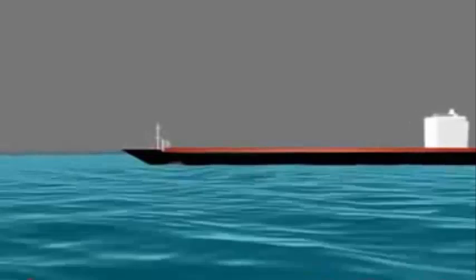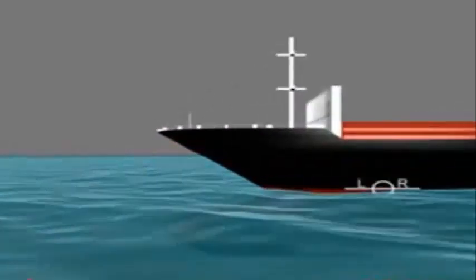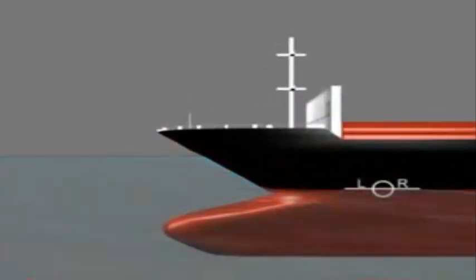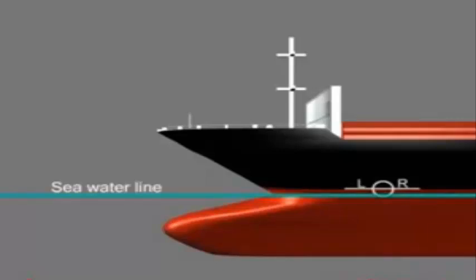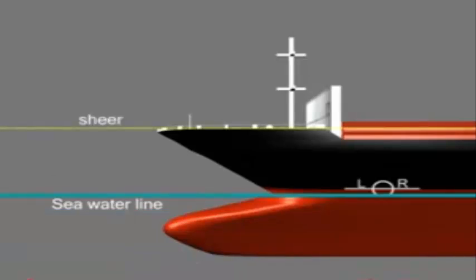The purpose of a load line or plimsoll line is to ensure that the ship is not overloaded and has sufficient freeboard. It indicates the maximum safe draft and the minimum freeboard for the ship in various operating conditions.